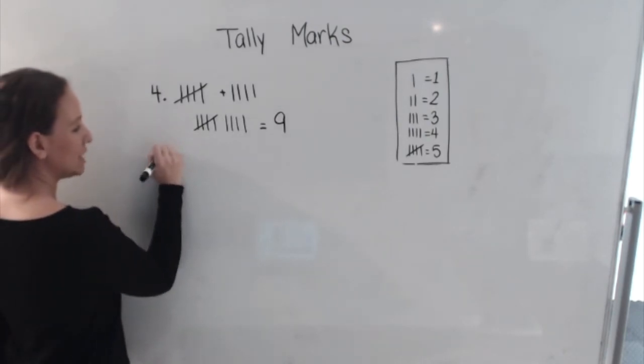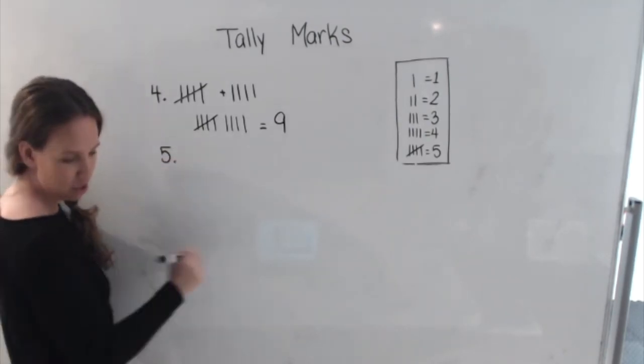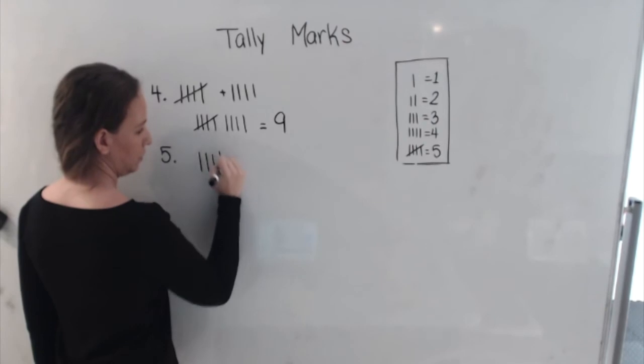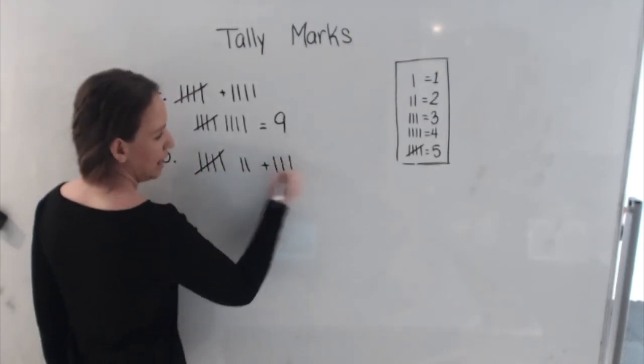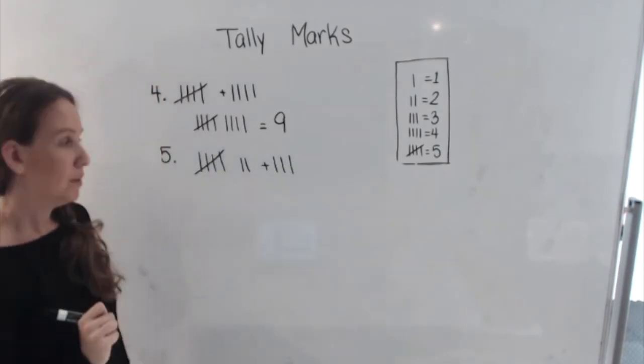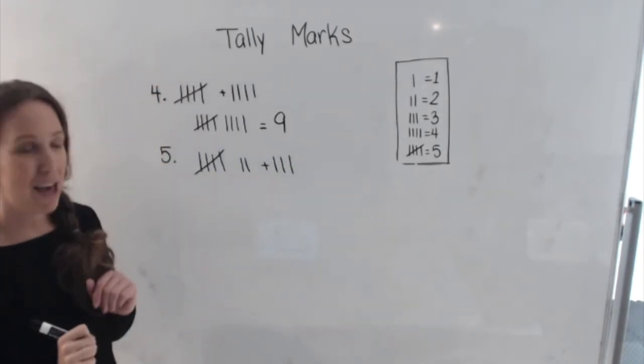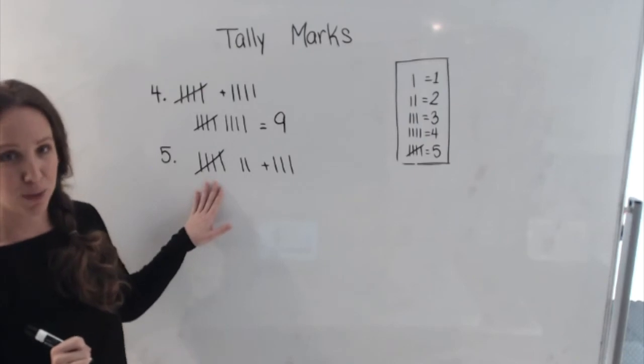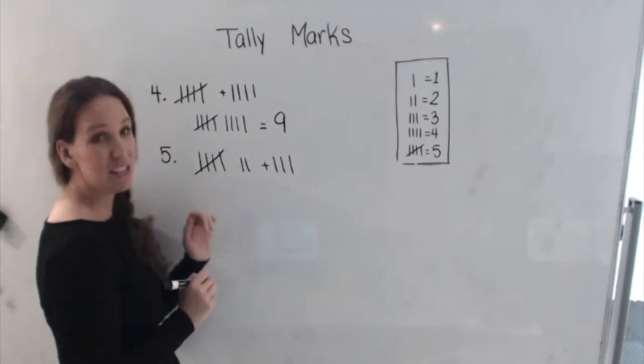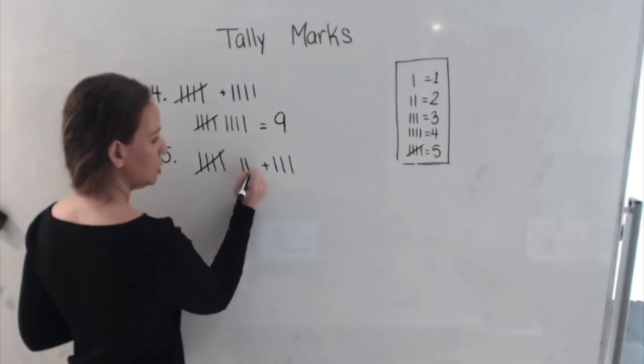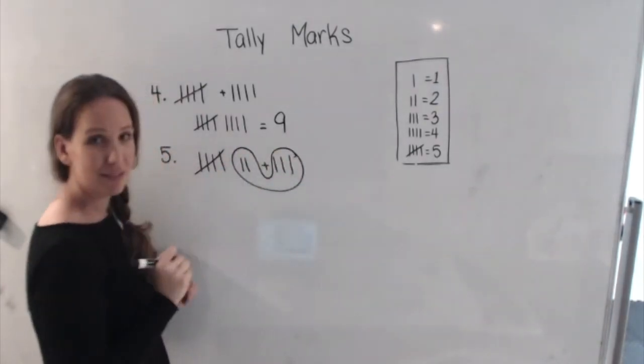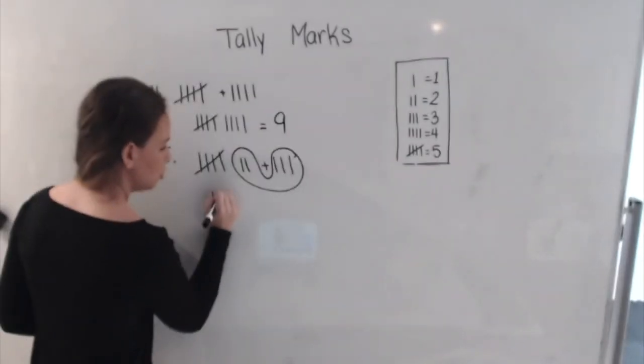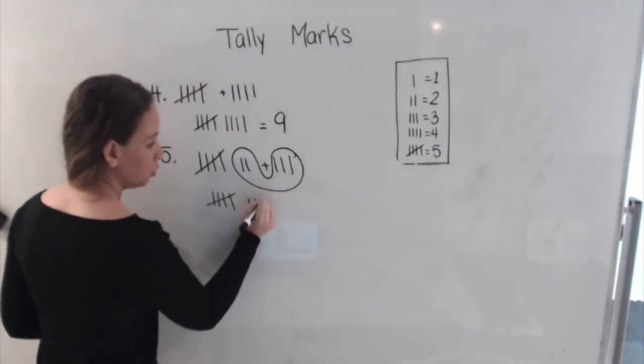And for the last one for today, we have one set of five and two. And then three on this side. Well, let's look at it without that plus sign. I already have one set of fives here. And let's see if I have another set. One, two, three, four, five. That's right. I do. Look at that. So we go one, two, three, four, five, one, two, three, four, five.